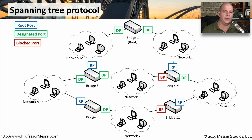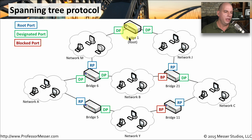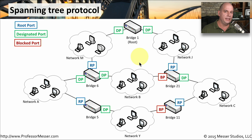In spanning tree, there is one device that is the root on the network. You can see all of the different networks and there are multiple switches or bridges between all of these different networks, with many different ways to communicate from one part to the other. Spanning tree has already converged and it has determined the best way to get from network to network without performing any type of loop.